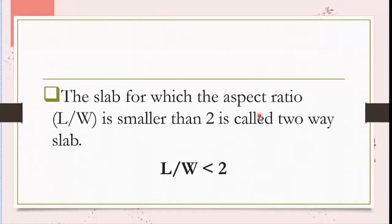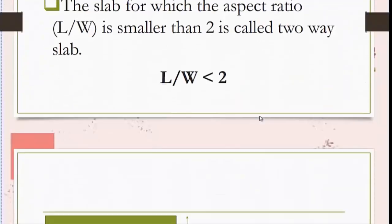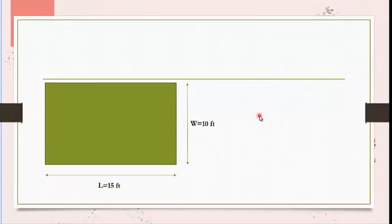The slab for which the aspect ratio — that is length divided by width — is smaller than two is called a two-way slab. For example, if the length of the slab is 15 feet and its width is 10 feet, the aspect ratio according to the formula will be 15 divided by 10, which equals 1.5, which is less than two — so this is a two-way slab.